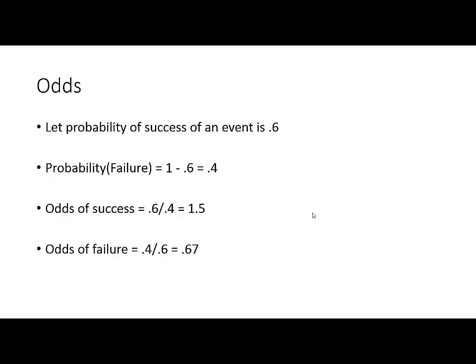Let's say that the probability of success of an event is 0.6. So the probability of failure is 1 minus 0.6, which equals 0.4. We define odds of success as the probability of success divided by the probability of failure: 0.6 divided by 0.4 equals 1.5.